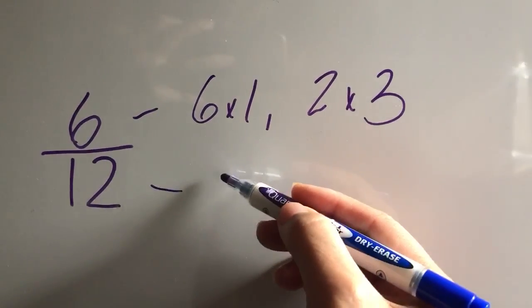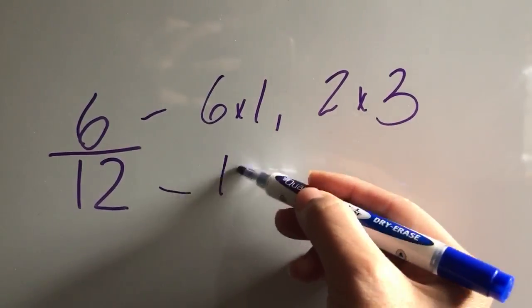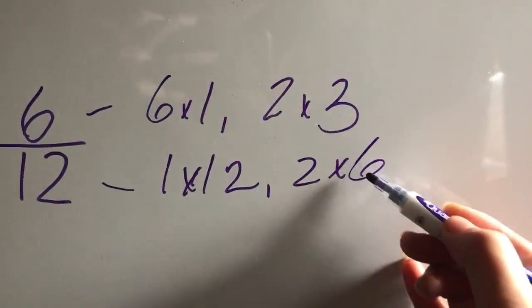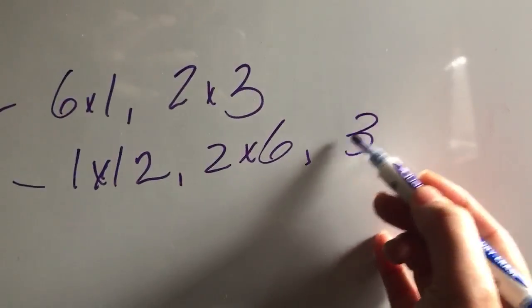Okay, and then for 12, underneath, I go, what multiplies to get to 12? 1 times 12, okay, or 2 times 6, and 3 times 4.